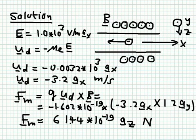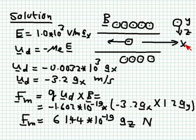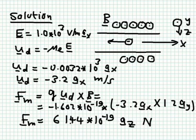We start by drawing a diagram. The copper wire is along the x-direction. The electric field of 1 kV/m is in the x-direction, so the electron drifts against it — in the minus x-direction. The magnetic field is normal to the wire; I take it to be out of the page, in the y-direction. Using this coordinate system, Z points downward. These are the three coordinates: X, Z, and Y coming out of the page.